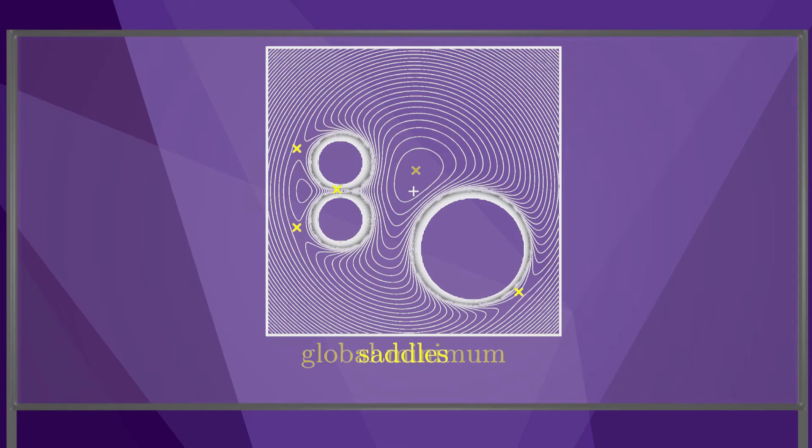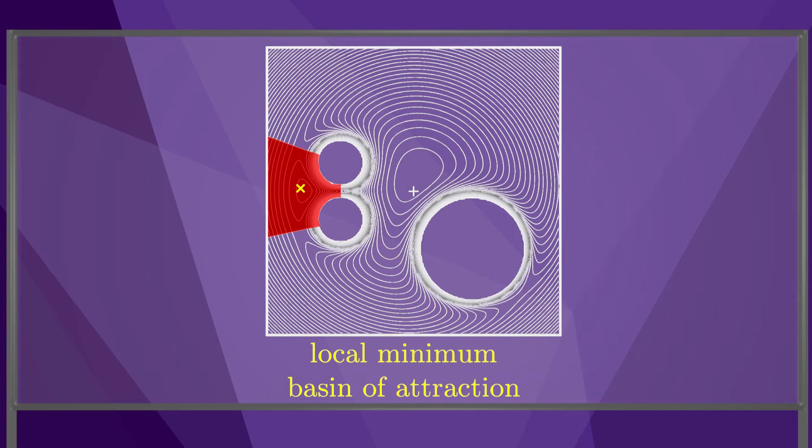The potential field also has saddle points, where the field is at a minimum in one direction and a maximum in another direction. There is also one local minimum, and this is a problem, as the local minimum attracts all points in this basin of attraction.